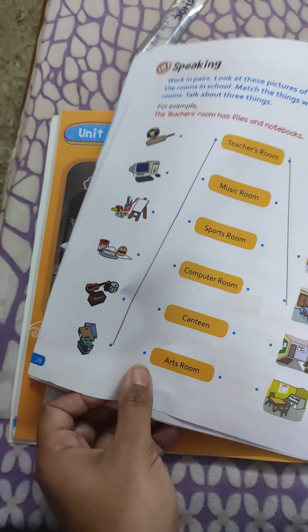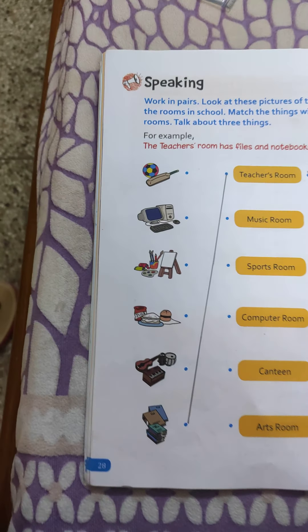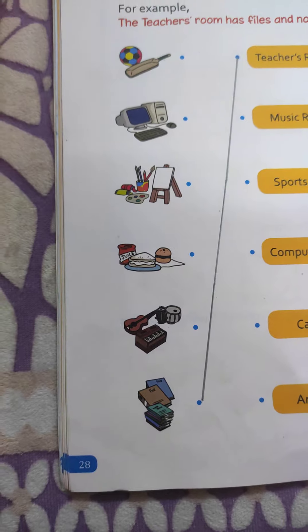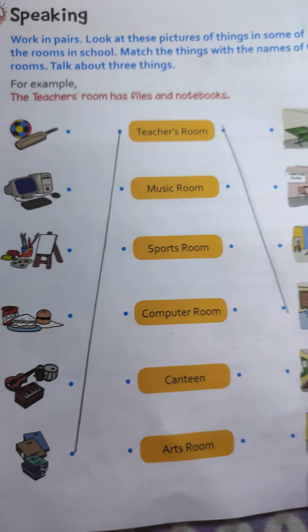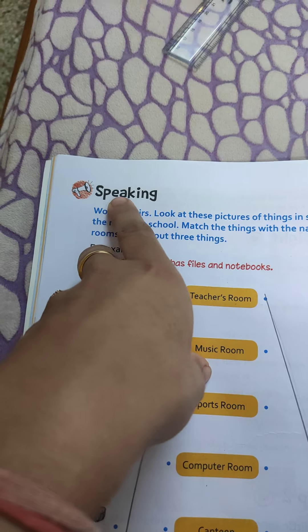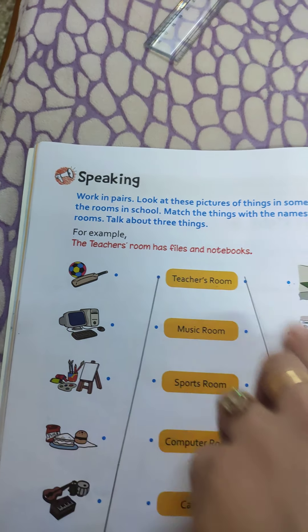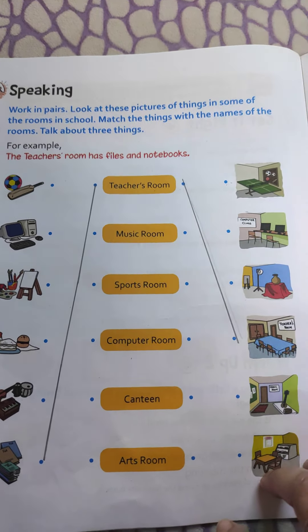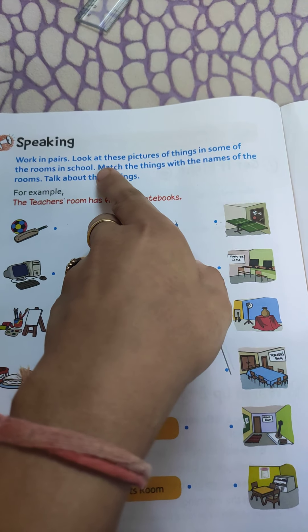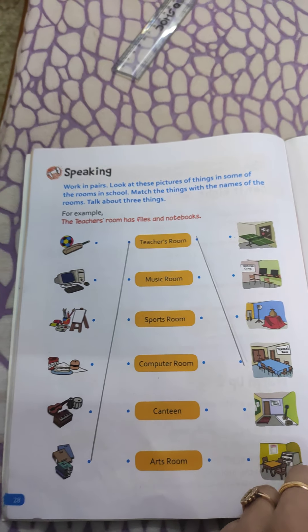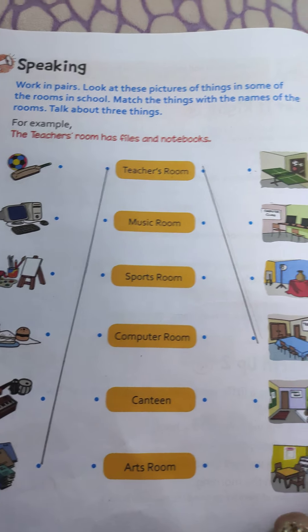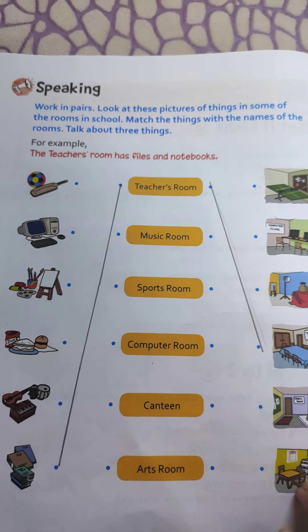So quickly turn to page number 28. Here it is — page number 28. Can you see, students? A speaking activity is given. Now what we have to do, we have to do this activity. Can you see, students, the pictures are given?